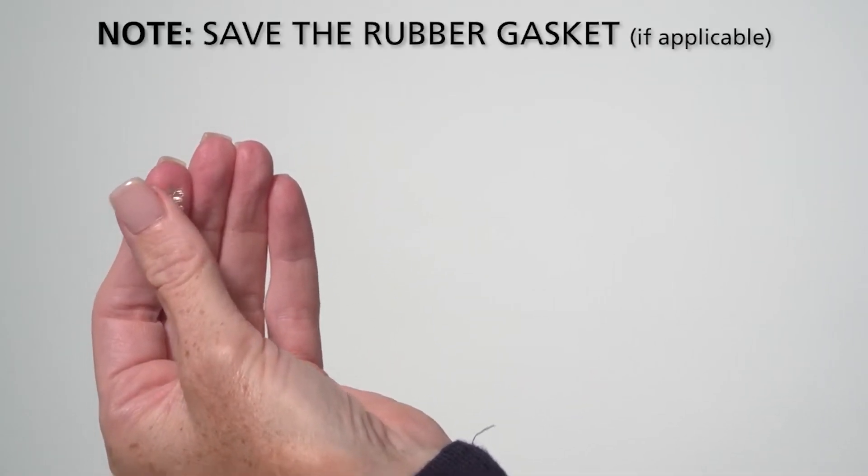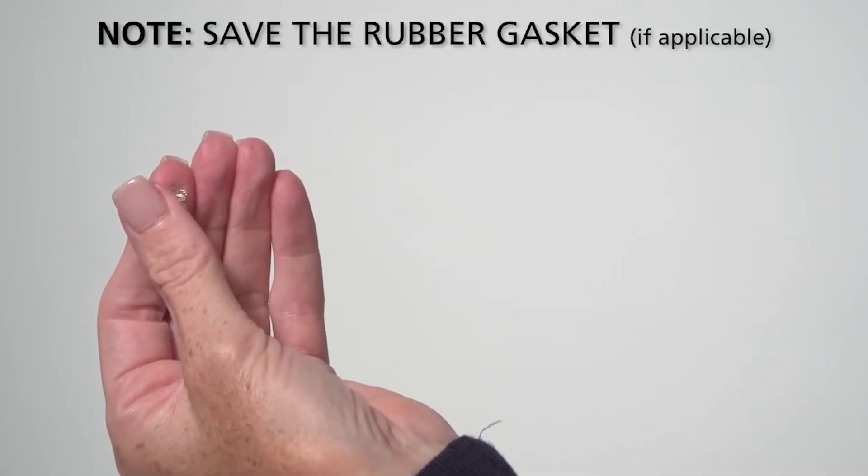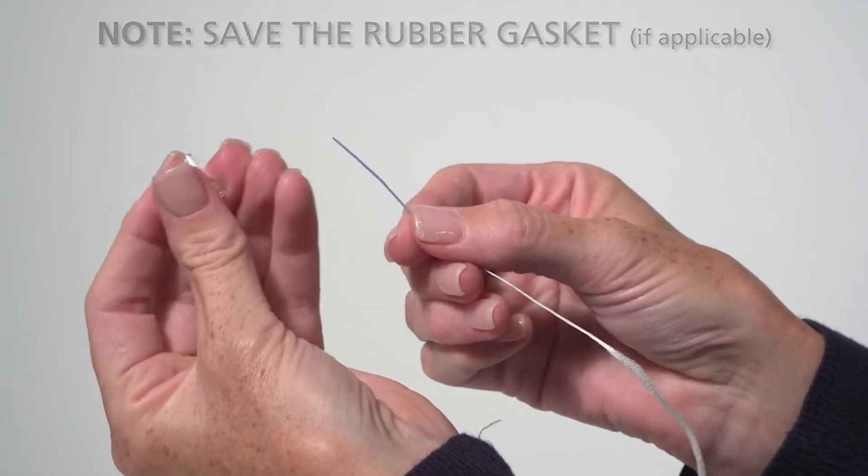Depending on the tympanometer used, there may be a rubber gasket. Do not discard this rubber piece as it must be in place when cleaning is completed.